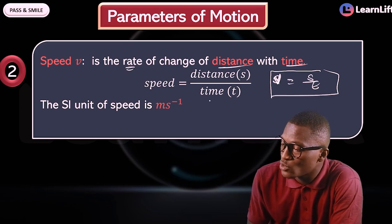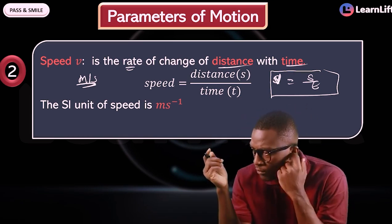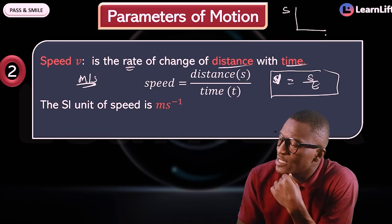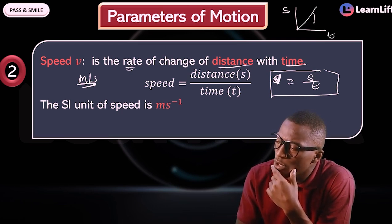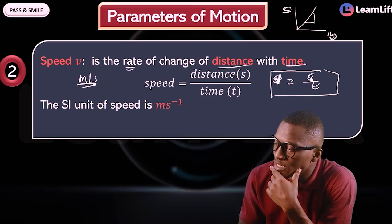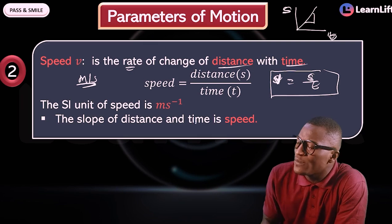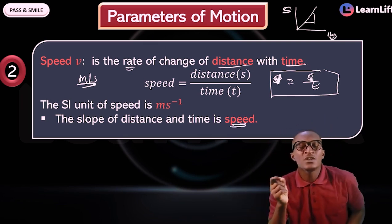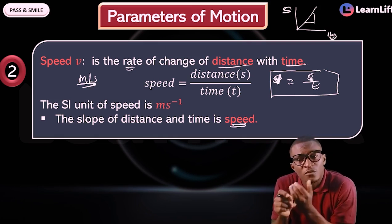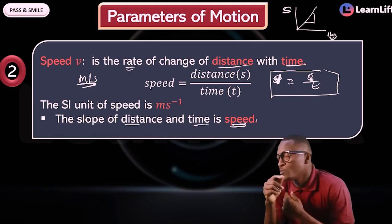Anytime you see meters per second, that's speed. Now if you're given a distance-time graph, the slope of that graph is called speed or velocity. The slope or tangent of a distance-time graph gives you speed. Speed has two parts: uniform speed and non-uniform speed.